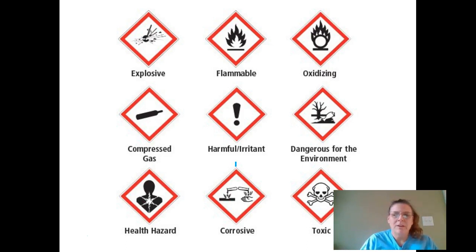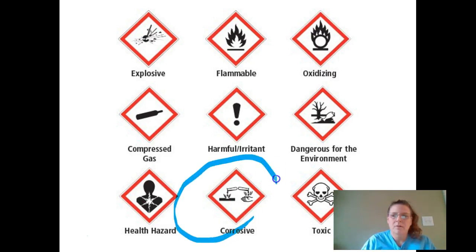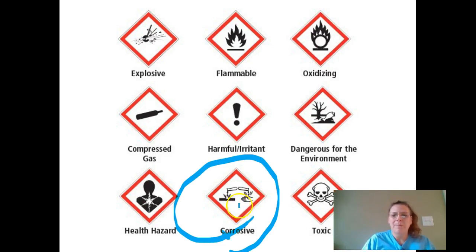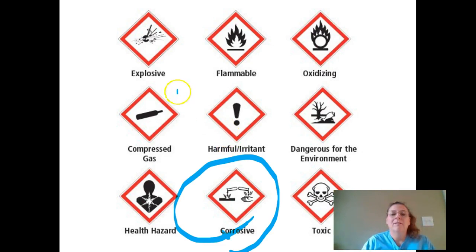This one right here is corrosive. You need to know what it looks like — it's got a hand, a piece of metal, and two test tubes with substances pouring out. You'll notice they're digging little holes and it's burning. That's what corrosive does: it eats away and burns. It's very hazardous to your skin and to metals, so if you have anything metal, you don't want to put it near a corrosive substance because it'll start eating it away.